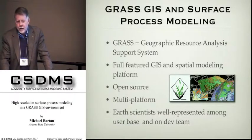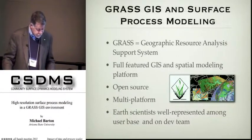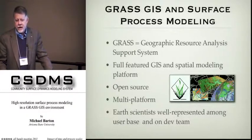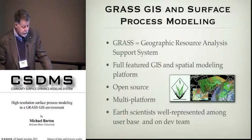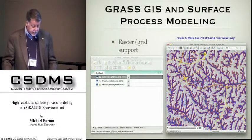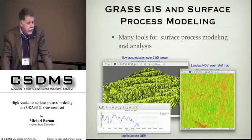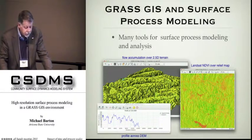GRASS itself is a wonderful 1980s acronym that supposedly stands for Geographic Resource Analysis and Support System. It's a full-featured GIS and spatial modeling platform — open source, multi-platform, with Earth scientists common in the dev team and user base. It's an international project with lots of input from people in other countries. Among its many features, it has extensive raster and grid support within a GIS environment. There are lots of very fast built-in tools for surface process modeling, including surface transformations, hydrology and surface flow, groundwater, solar insulation and radiance, and interpolation. It has a really good map calculator with lots of functions from matrix operations.